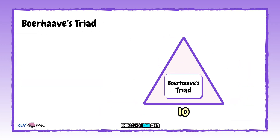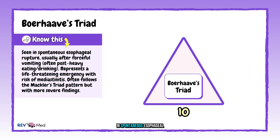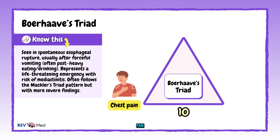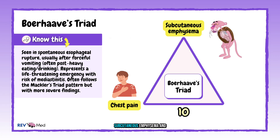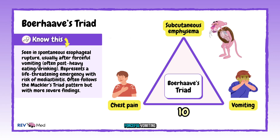Number ten: Boerhaave's triad, seen in spontaneous esophageal rupture. You have chest pain, subcutaneous emphysema, and it usually follows after forceful vomiting.